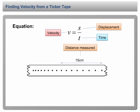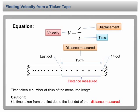In a ticker tape, the displacement can be measured directly from the length of the tape. The time taken can be determined from the number of ticks of the measured length. We need to be cautioned that t is the time taken from the first dot to the last dot of the distance measured.